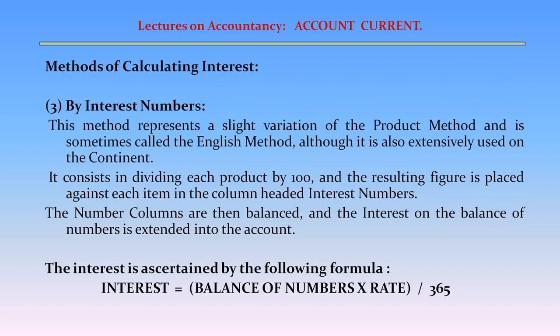Method 3: By Interest Numbers. This method represents a slight variation of the product method and is sometimes called the English method, although it is also extensively used on the continent. It consists in dividing each product by 100, and the resulting figure is placed against each item in the column headed 'interest numbers.' The numbers columns are then balanced and the interest is ascertained by the formula: Interest = Balance of Numbers × Rate / 365.